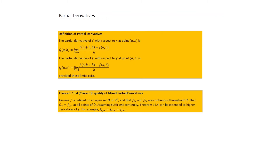Next, we looked at the equality of mixed partial derivatives. If FXY and FYX are both continuous, then FXY = FYX. This extends to triple differentiation: for example, FXYX = FXXY = FYXX, provided all partial derivatives are continuous, meaning all three combinations are equivalent.